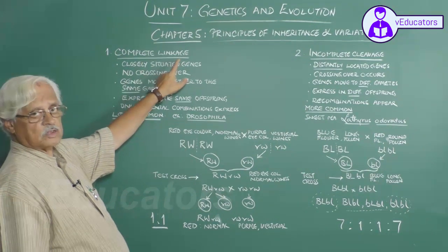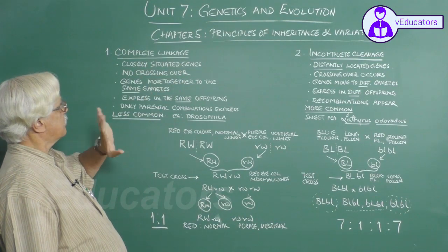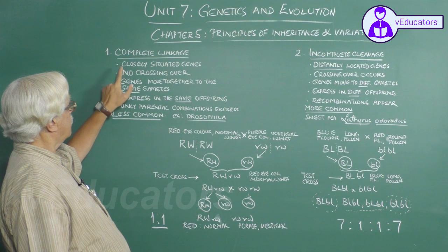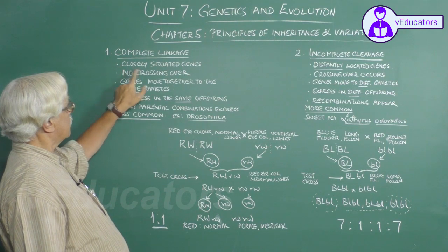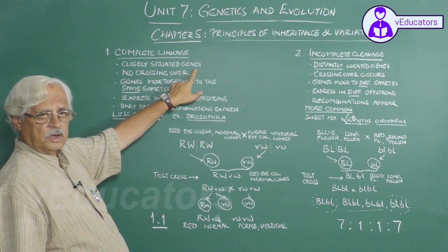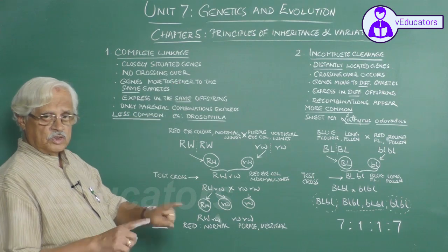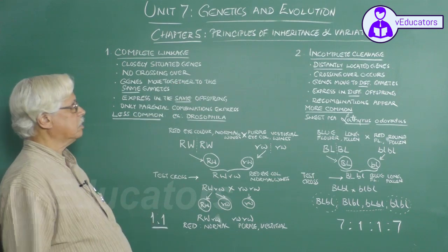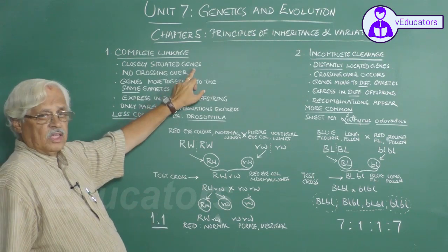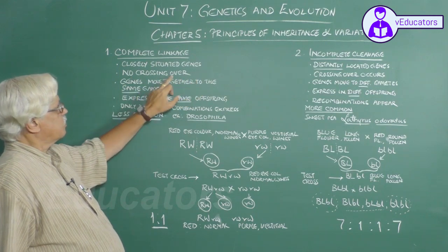Complete Linkage, also called Paripurna Linkage. In this case, genes are very closely located and very closely situated. Because they are so closely located, there is no crossing over.